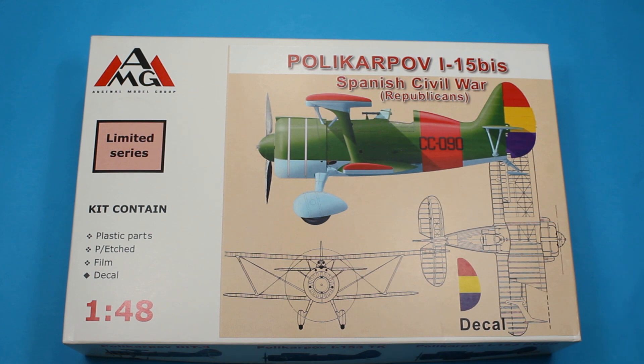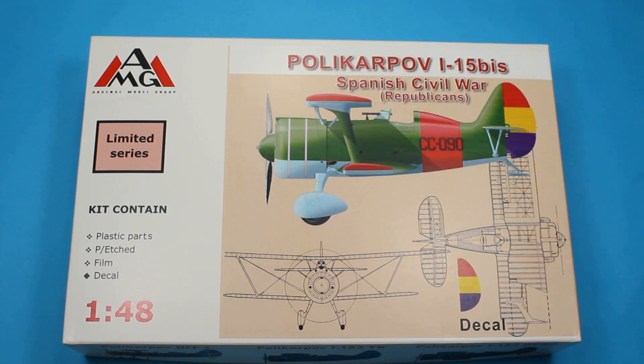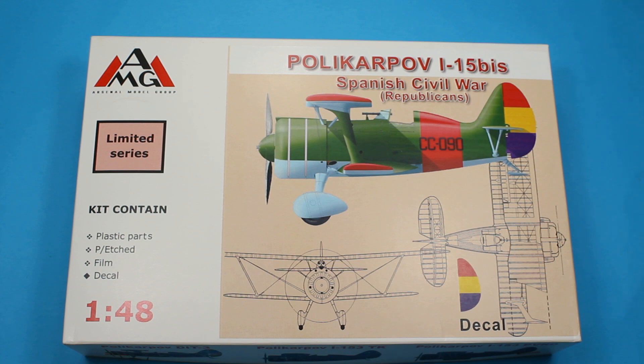What we've got here is the Polikarpov I-15 BIS. It's a re-engined version of the I-15, which was the Chateau that had the radial engine on the front pretty much exposed. This has got a cowling around it, more powerful engine, a bit more chunky.